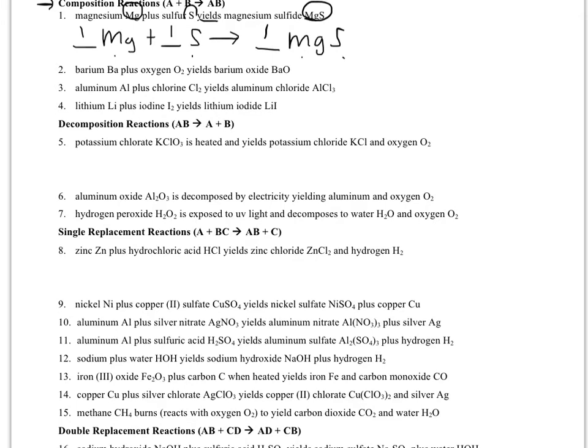We'll move along to our decomposition reaction. So we're going to break a compound apart here. So it says we have potassium chlorate KClO3. It is heated and yields - so yields means put an arrow. Because it says heated, remember we need to put a triangle over the arrow. And what it yields, the products are potassium chloride KCl and oxygen O2.